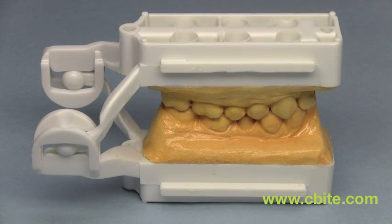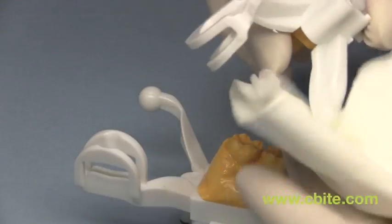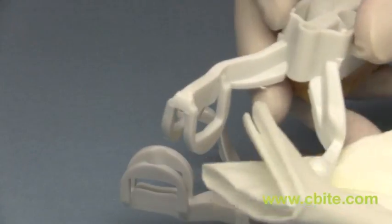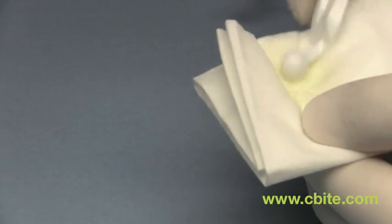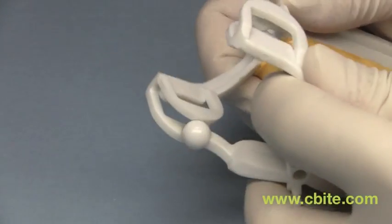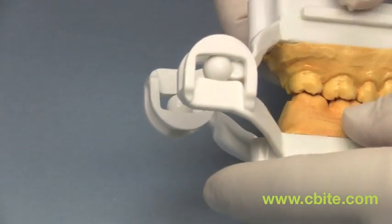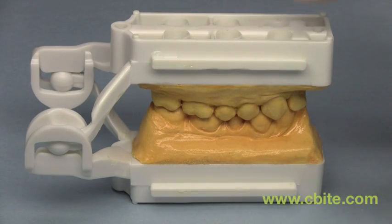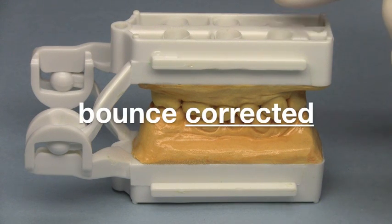Unless an incorrect bite is obvious, it's easier to start by lubricating the ball and clasp assembly. Let's see if there's still a bounce. No more bounce, the problem is fixed.